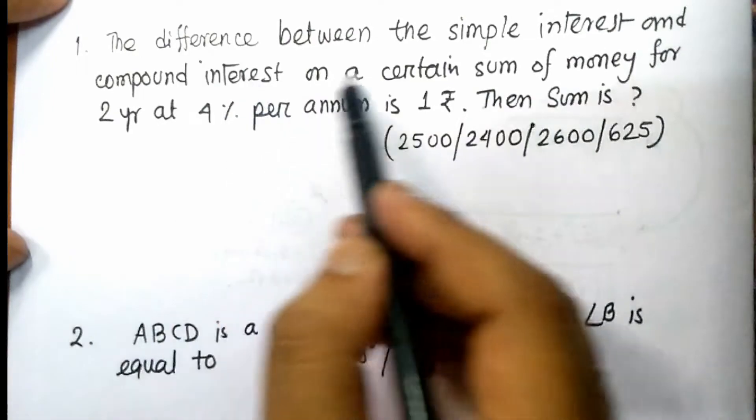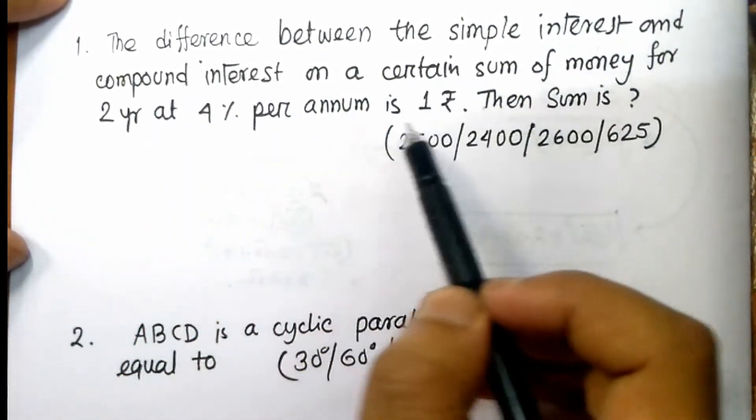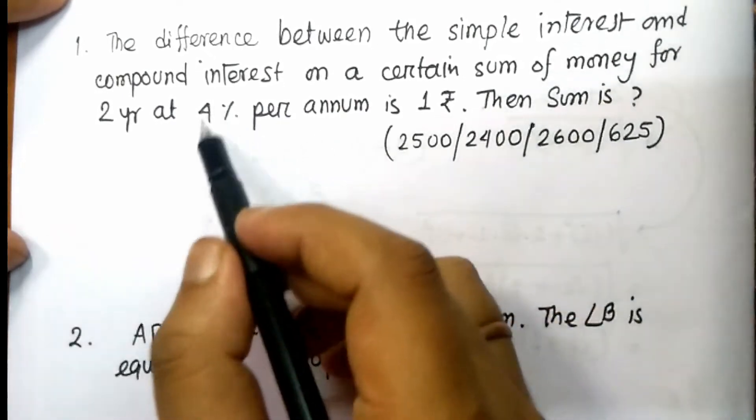First of all, the difference between the simple interest and compound interest on a certain sum of money for 2 years at 4% per annum is 1. Then sum is? This is the difference between for 2 years.